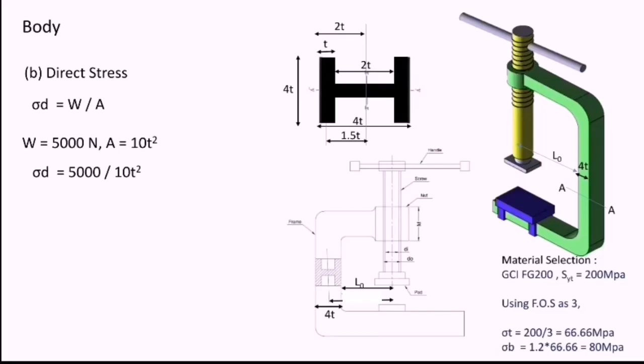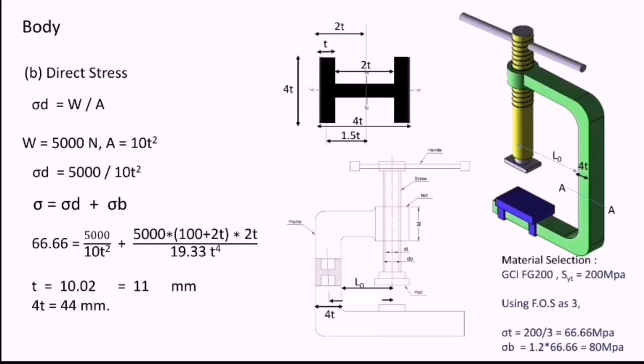As we have selected the material as GCI FG200, the maximum tensile stress acting on the body should not exceed 66.66 MPa. Hence, equating the stresses acting on the body to 66.66, I will get the value of t as 10.02 mm, which I will approximate as 11 mm. Hence, I will get the value of the section, that is 4t, which will be 44 mm. This completes the solution. Thank you.